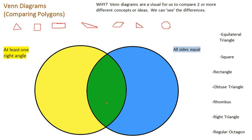Everything in the middle, which is shaded green—you get yellow and blue make green. Everything in the middle has to fit both criteria or sets of information. In this case, it has to have at least one right angle, and the polygon has to have all sides equal as well.